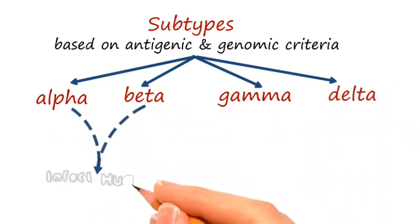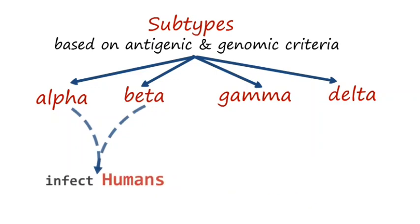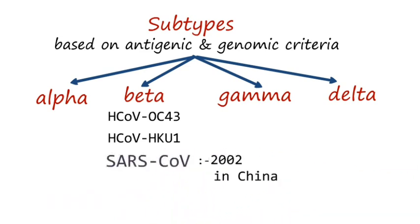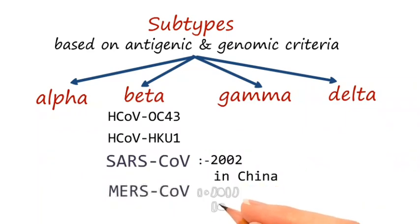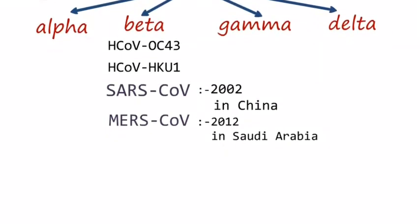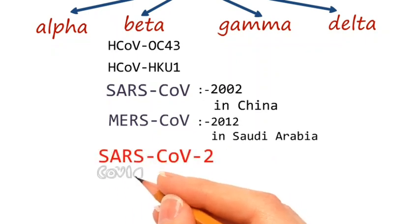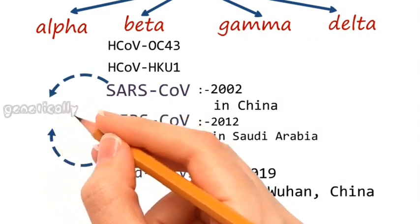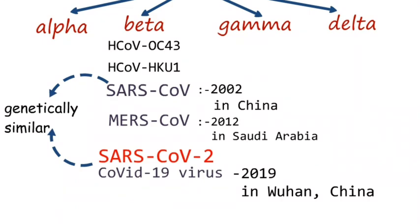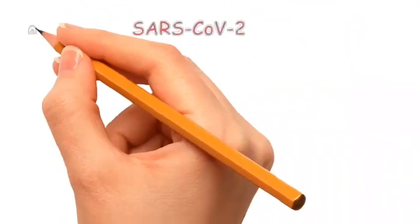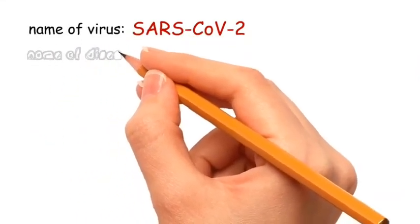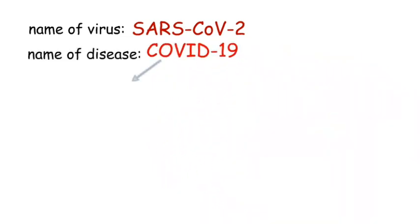The alpha and beta viruses infect humans. In beta, SARS-CoV — reported in 2002 in China — MERS-CoV — reported in 2012 in Saudi Arabia — and SARS-CoV-2, the COVID-19 virus reported in 2019 in Wuhan, China, are included. SARS-CoV and SARS-CoV-2 are genetically similar. The virus is named SARS-CoV-2, short for Severe Acute Respiratory Syndrome Coronavirus, and the disease was named COVID-19, short for Coronavirus Disease.